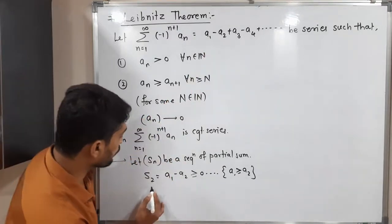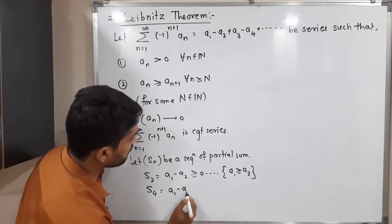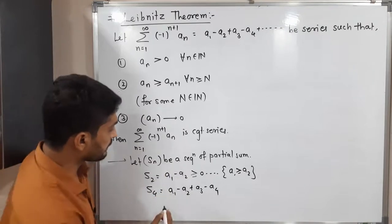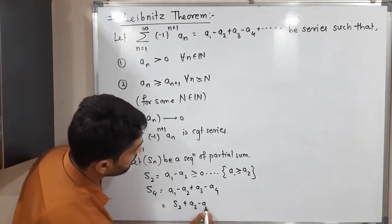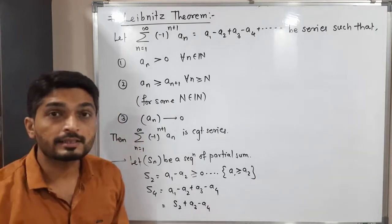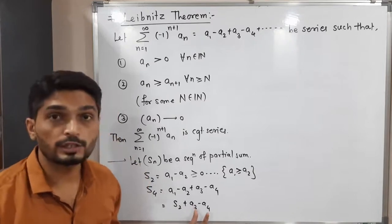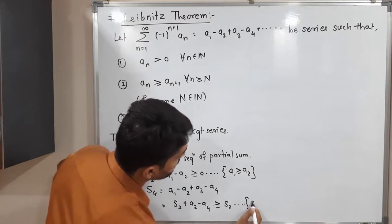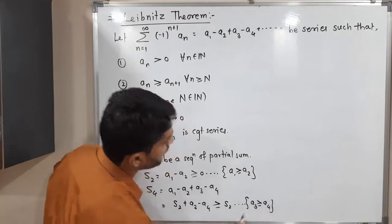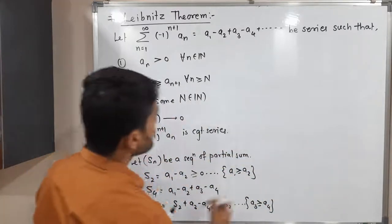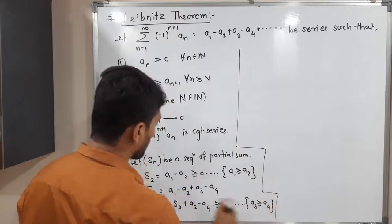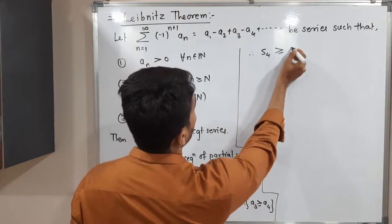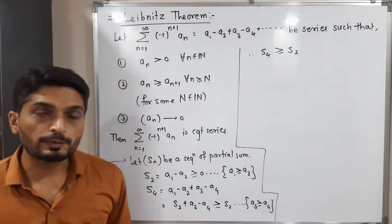Now consider s4, which equals a1 minus a2 plus a3 minus a4. This can be written as s2 plus (a3 minus a4). Since a_n is decreasing, a3 is greater than or equal to a4, so (a3 minus a4) is a non-negative number. Therefore s4 is greater than or equal to s2.